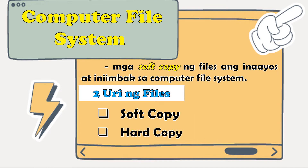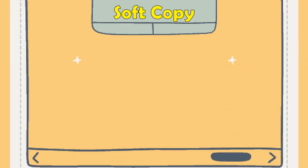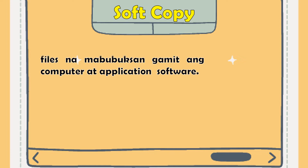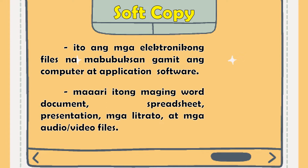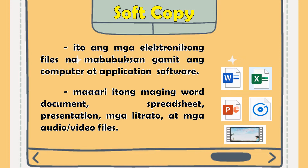Ano ang pagkakaiba ng dalawa? Ang soft copy, ito ang mga elektronikong files na mabubuksan gamit ang computer at application software. Maaaring itong maging Word Document, Spreadsheets or Microsoft Excel, Presentation o PowerPoint Presentation, Mga Litrato, at Mga Audio or Video Files.